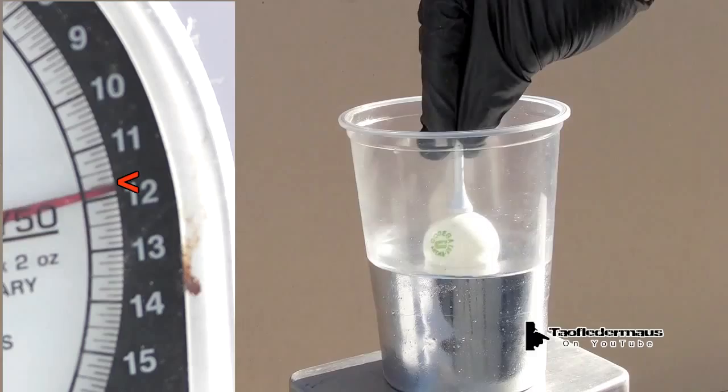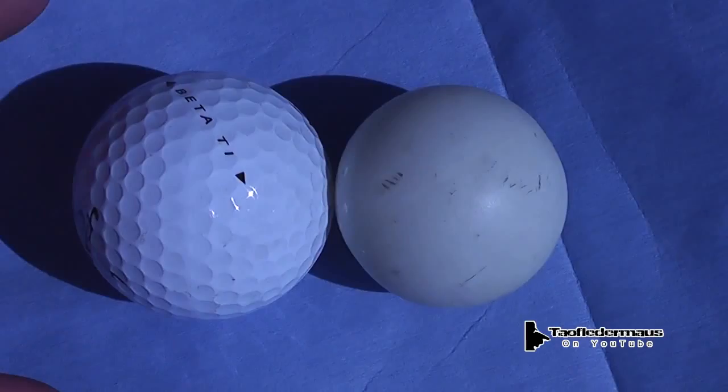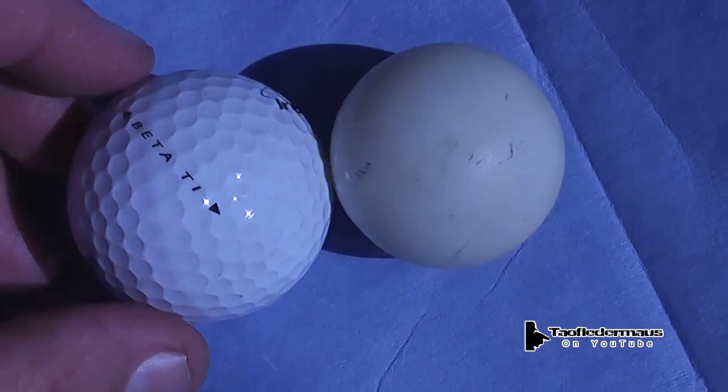So despite being heavier than the ping pong ball, the golf ball took more force to submerge it than the ping pong ball. The golf ball is slightly larger than the ping pong ball. So even though it's heavier and it sinks in water, it displaces much more of the mercury than the ping pong ball just due to its volume.